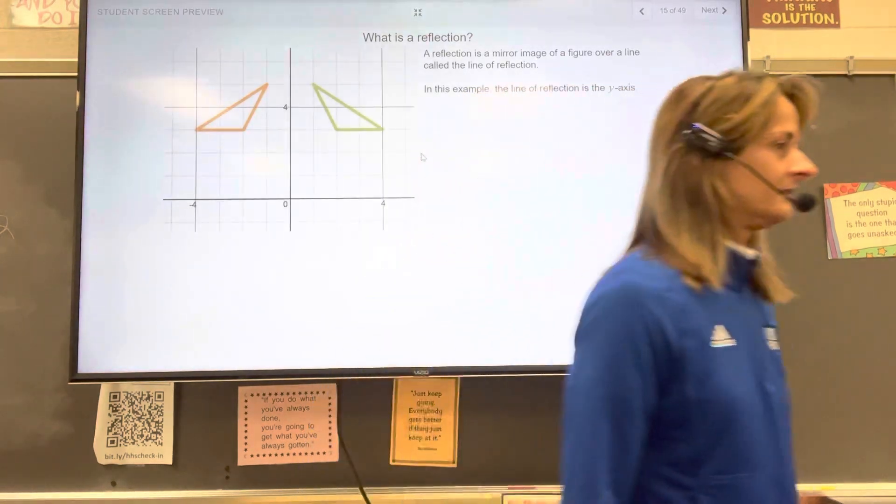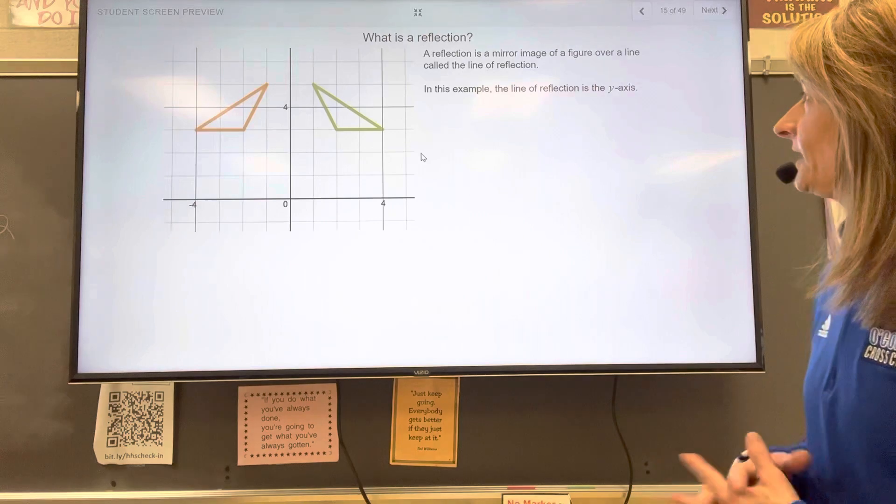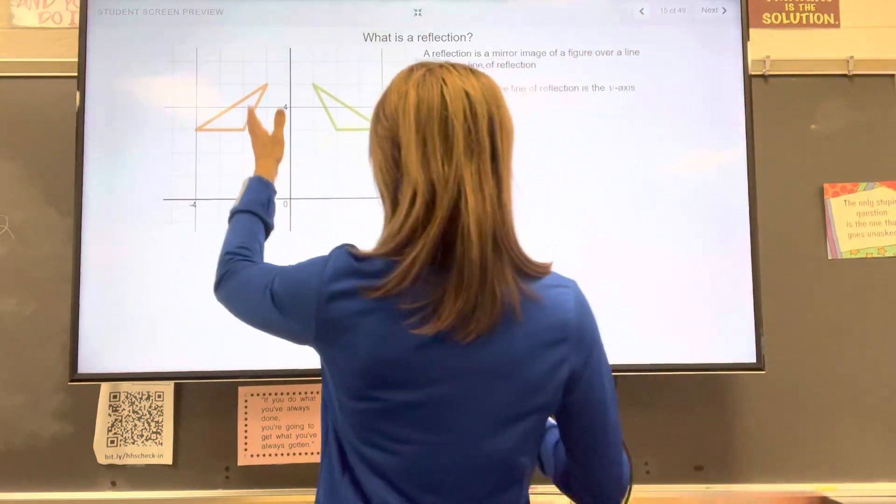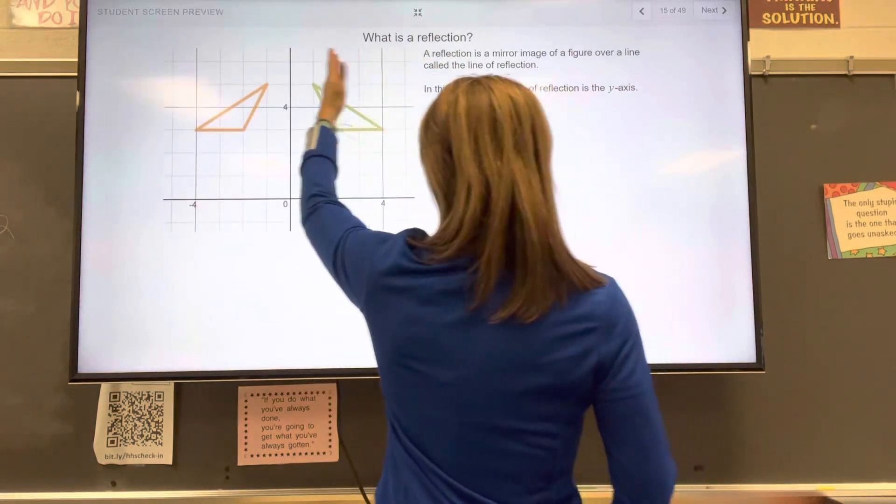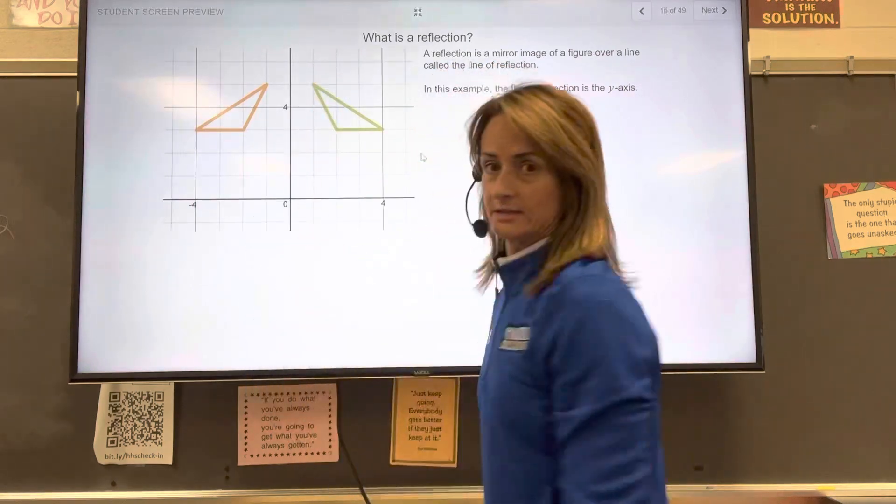So we're going to start with what a reflection is. A reflection, we're on slide number 15. A reflection is a mirror image of a figure over a line called the line of reflection. So for example, this triangle has been reflected over the y-axis. So the line of reflection is the y-axis in this example.